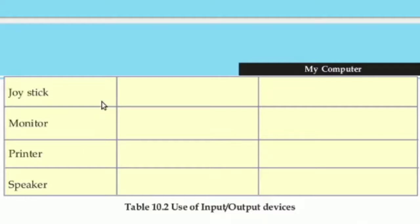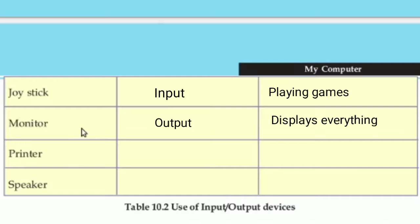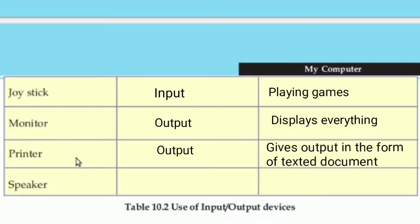Next is the joystick, an input device used for playing games. Next is the monitor — it is an output device that displays results on the screen. The next is the printer, which is an output device that gives output in the form of a text document. Last is the speaker — it is an output device from which we can hear audio or sound.